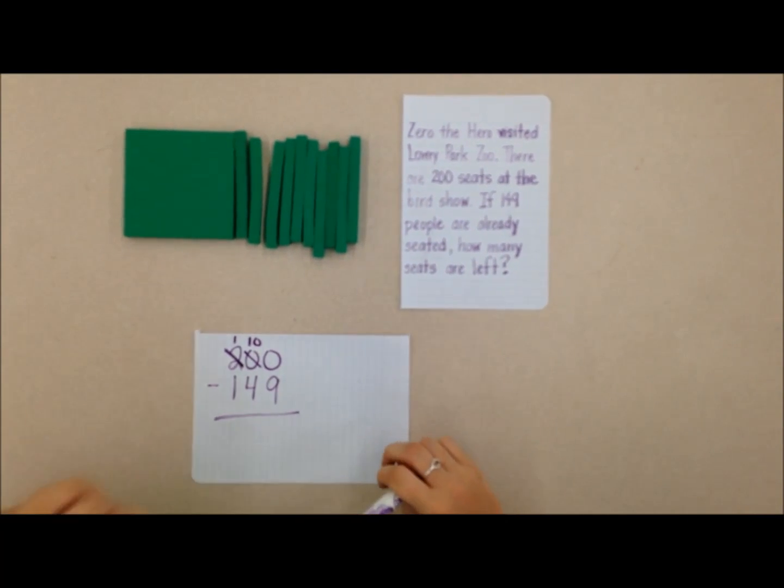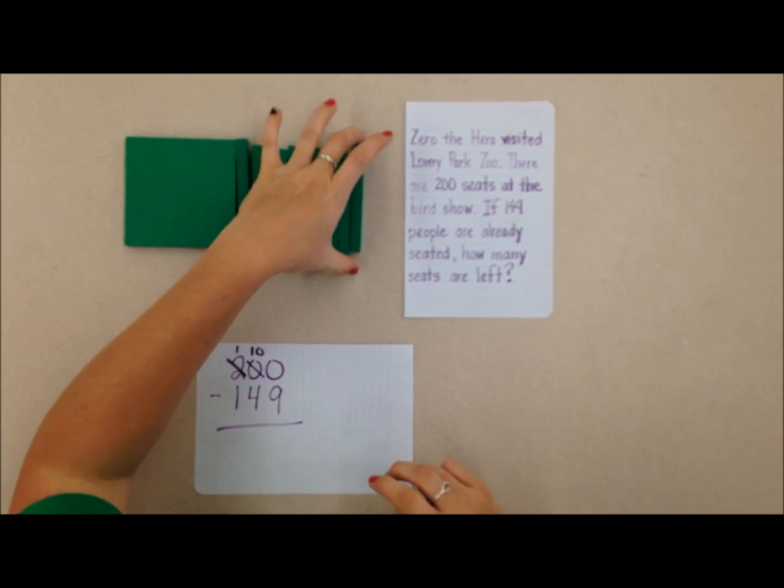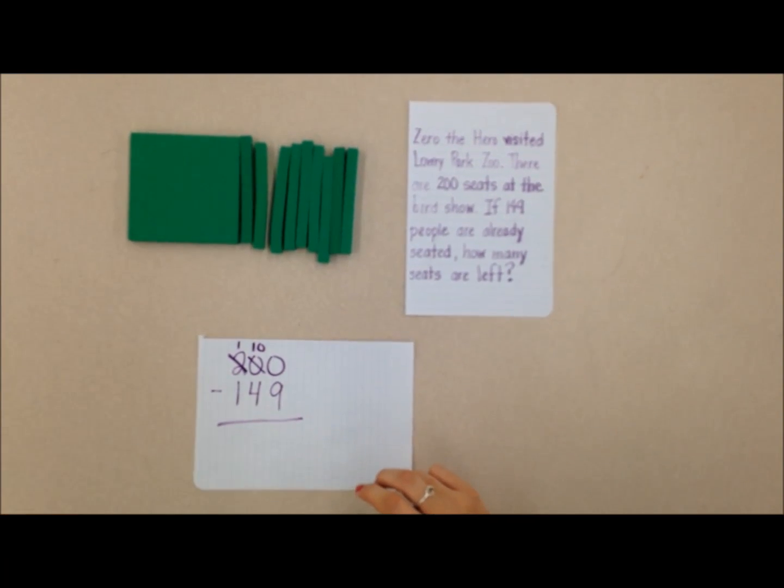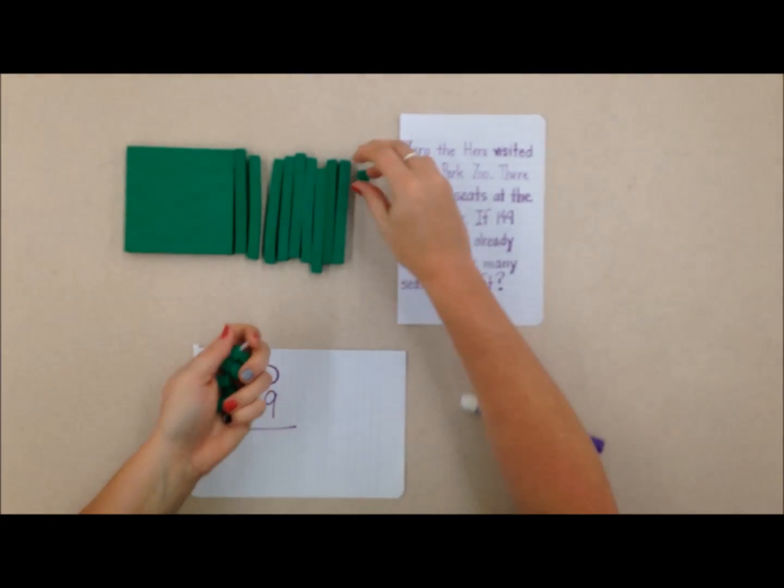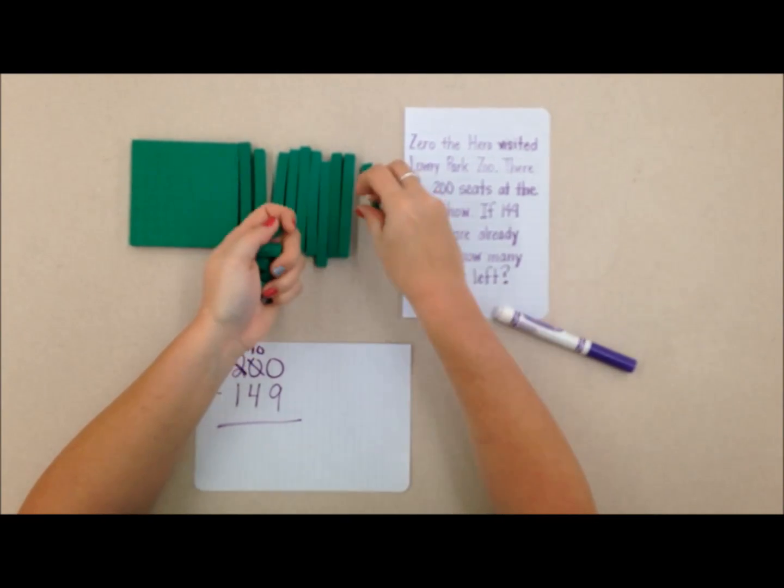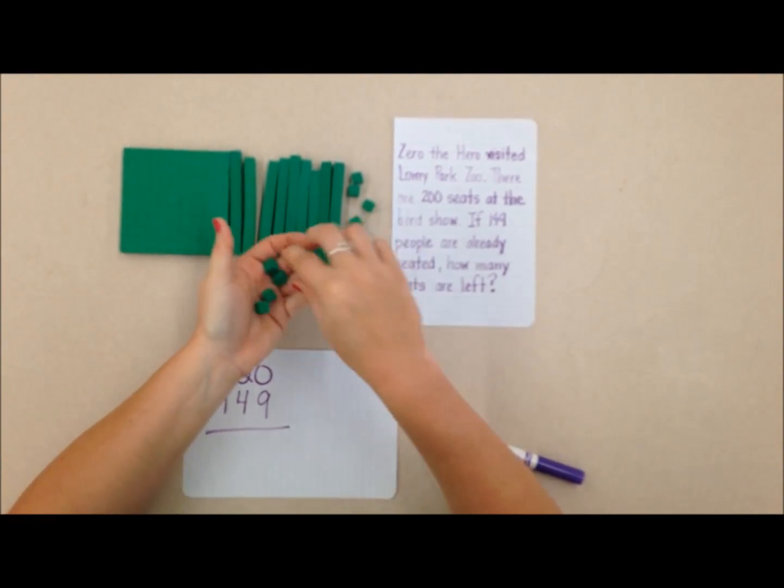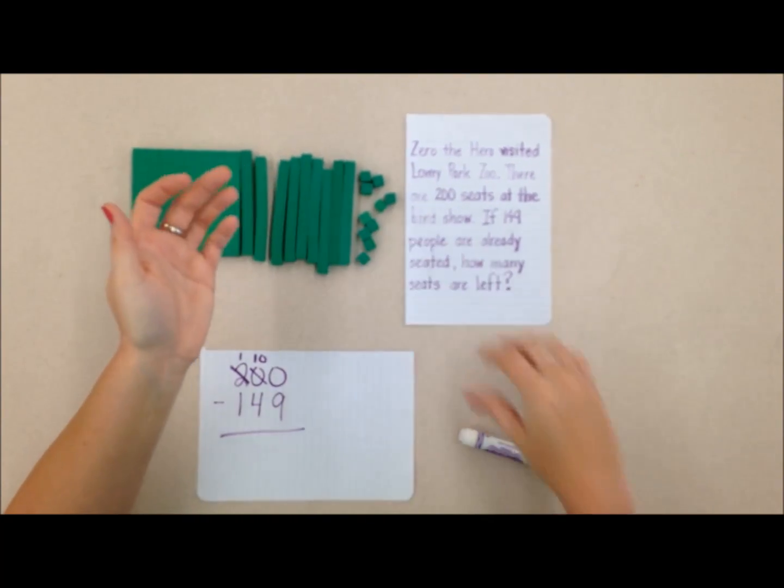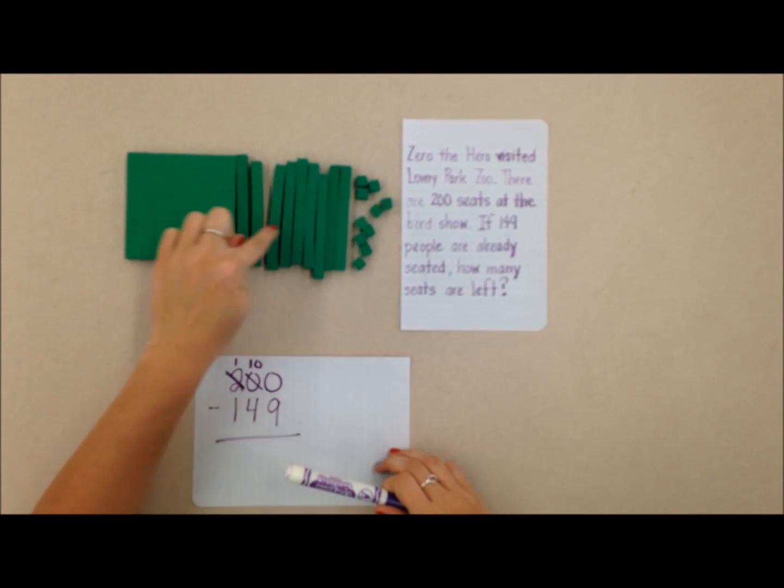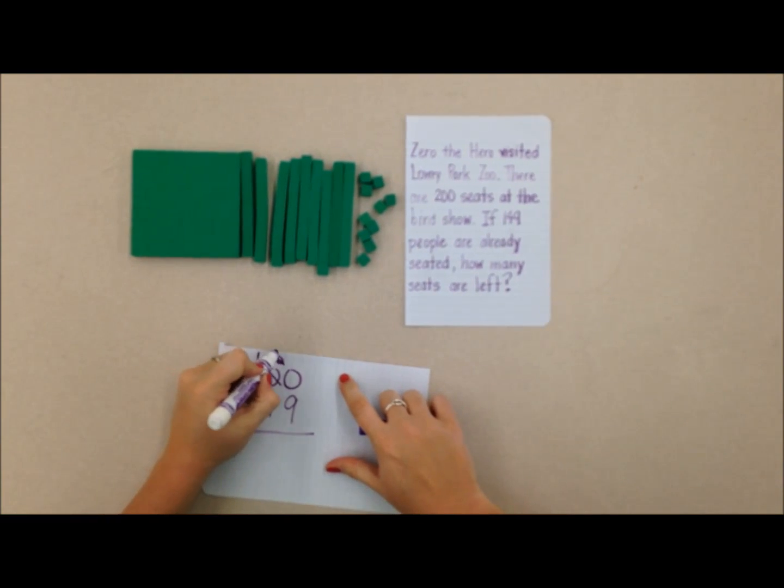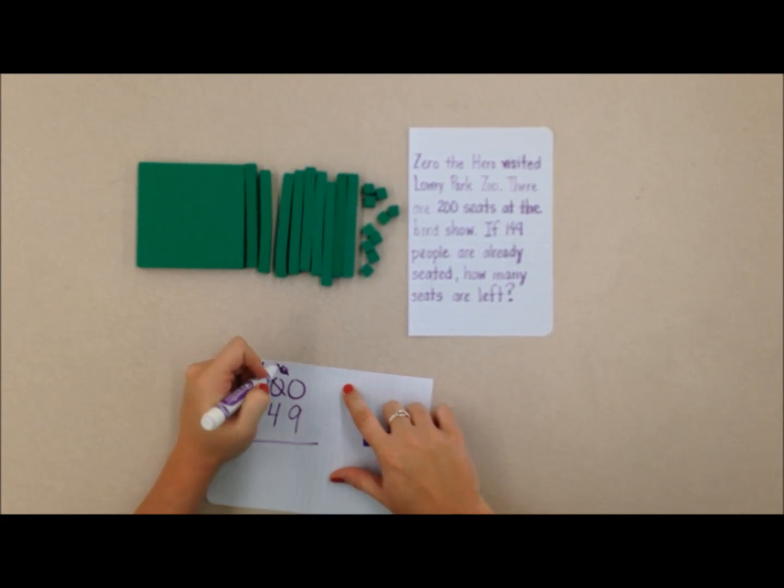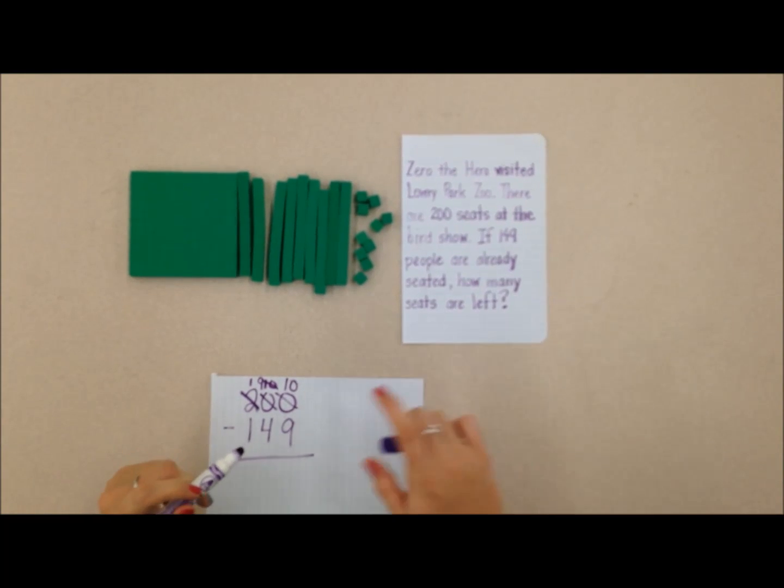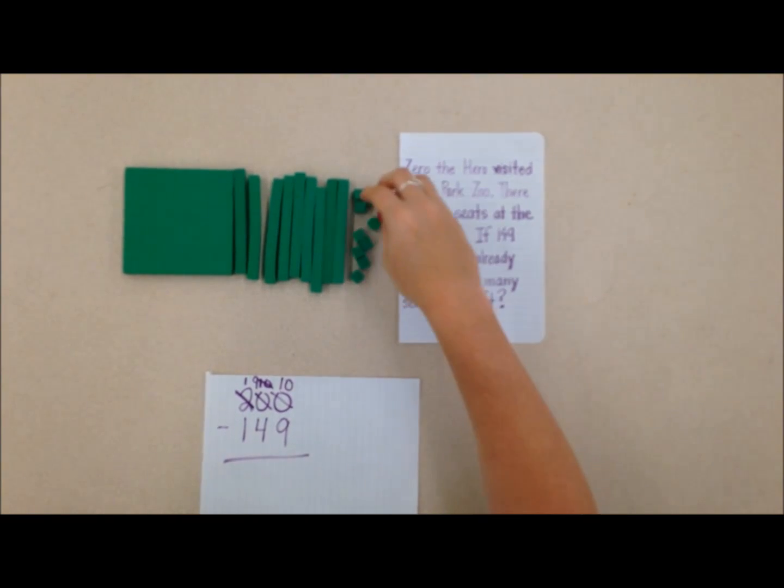But again, I remember that if I have a ten I can trade it for ten ones. So I'm gonna do that. I'm gonna trade this ten for ten ones: one, two, three, four, five, six, seven, eight, nine, ten. So now I still have 100, but I don't have ten tens anymore. I have nine tens, and now I have ten ones.